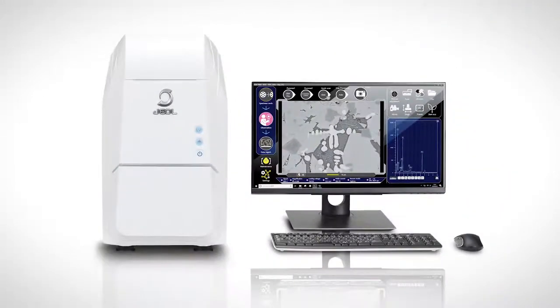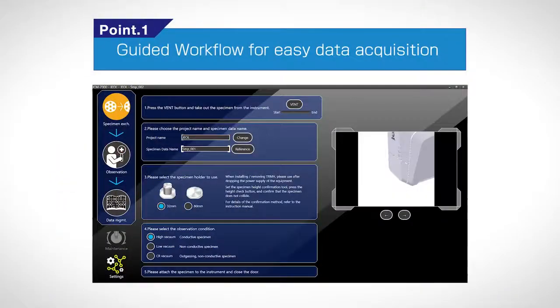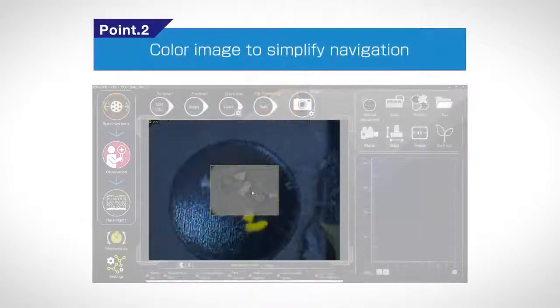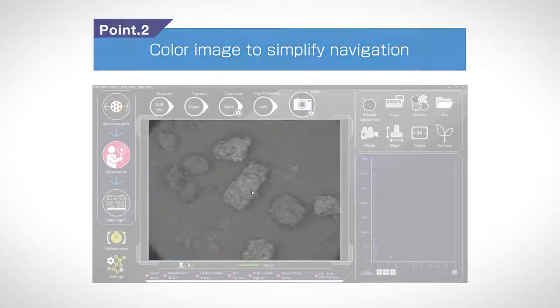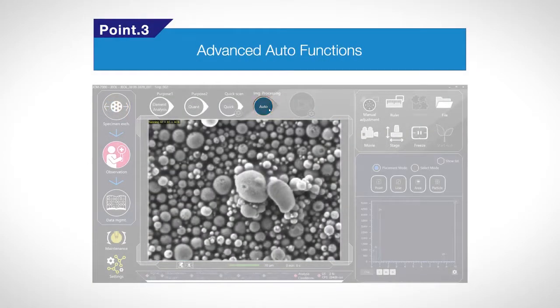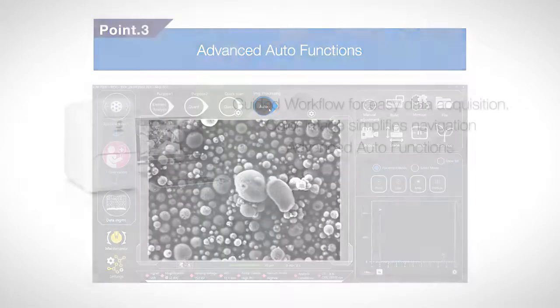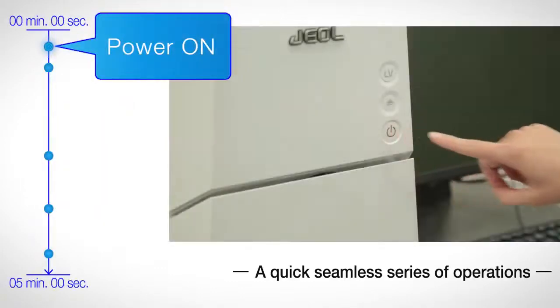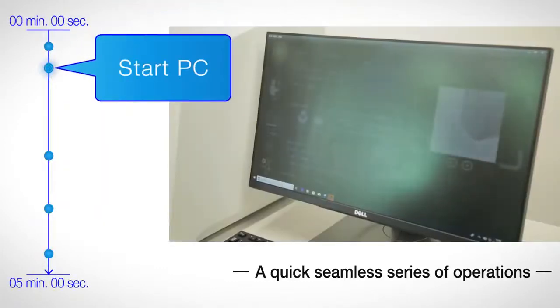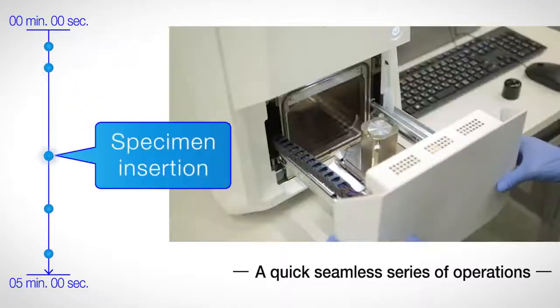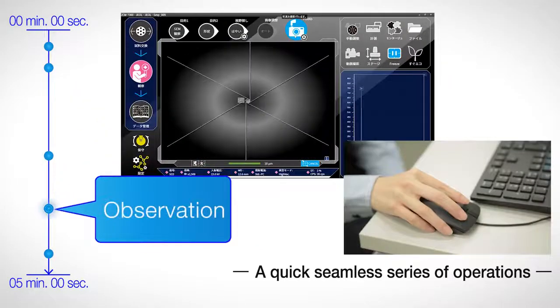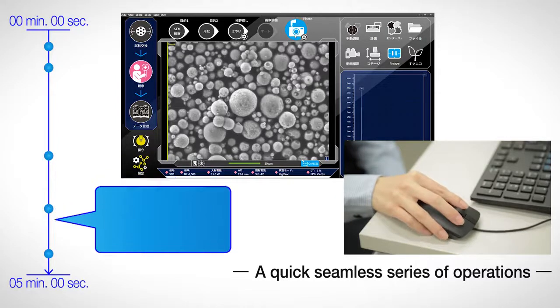Incorporating one, a guided workflow for data acquisition; two, a color image for specimen navigation; and three, advanced auto functions, the JCM-7000 SEM is accessible for all experience levels. This is a system of exceptional throughput and performance for both beginner and expert users, from startup and data acquisition to report output in minutes.